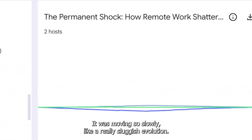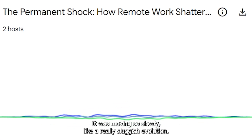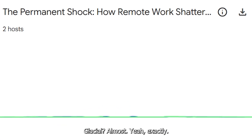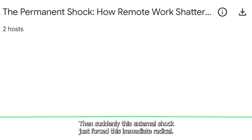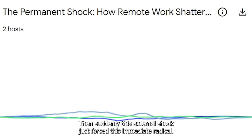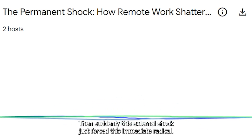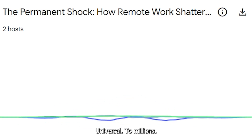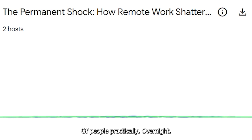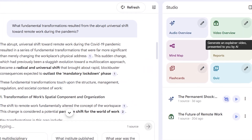The podcast dialogue sounded natural — the hosts described how change was moving slowly, like a really sluggish, glacial evolution, and then suddenly an external shock forced immediate, radical change that was universal to millions of people practically overnight.